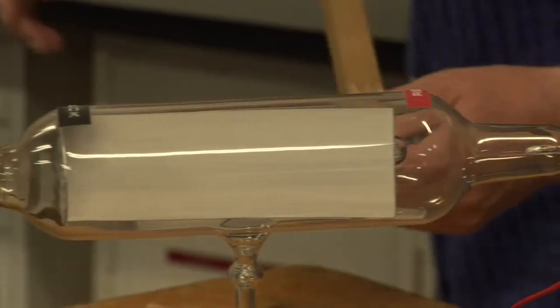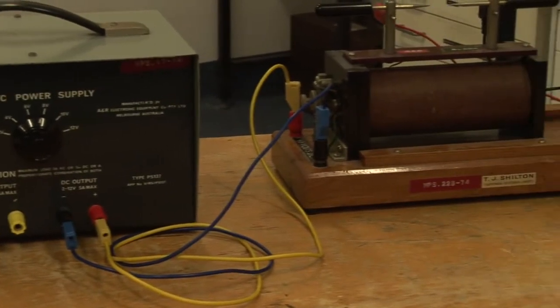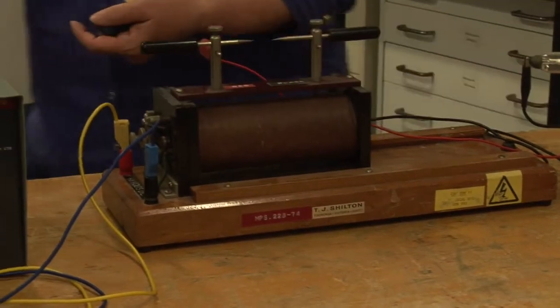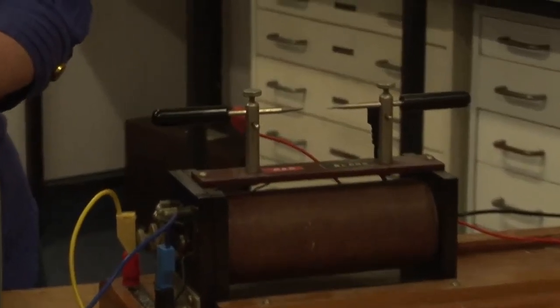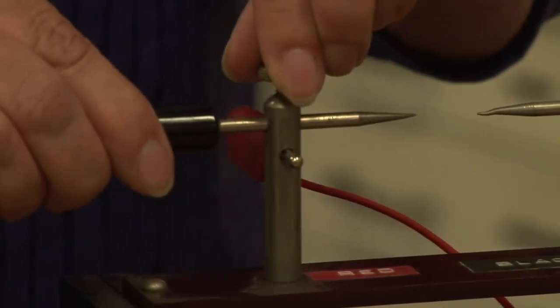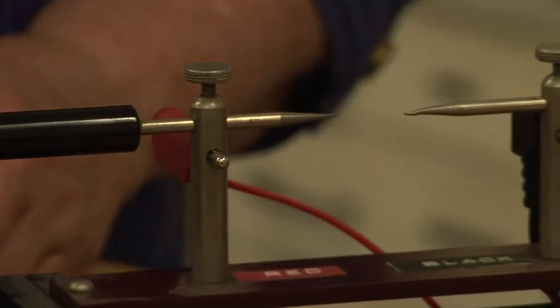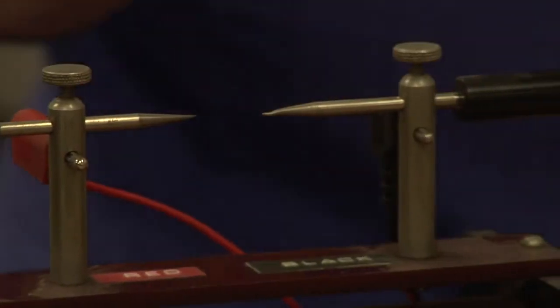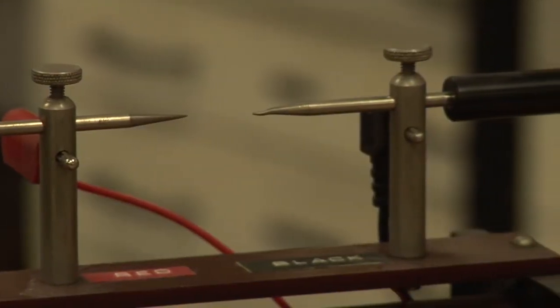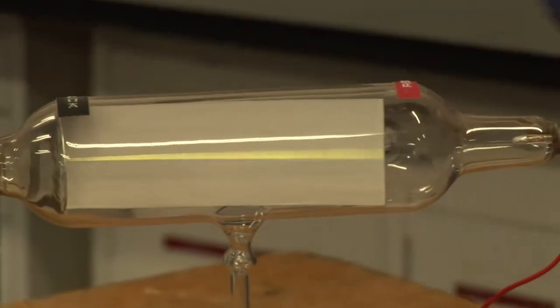If we turn the high voltage on... I'll just pull those a bit further apart. We're definitely getting a beam of electrons across here. I'll turn the light off so you can see what's going on a bit better.